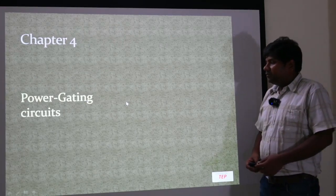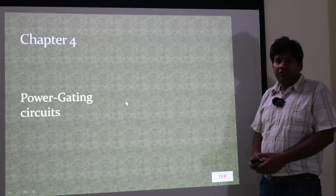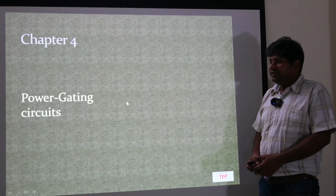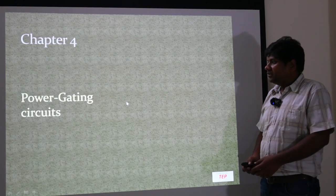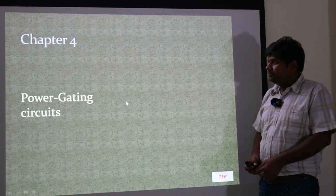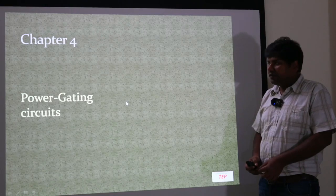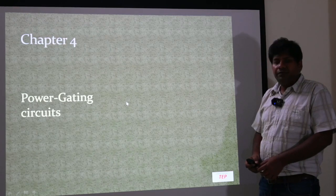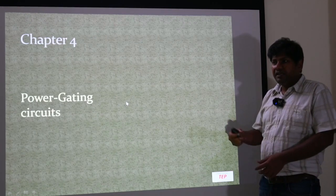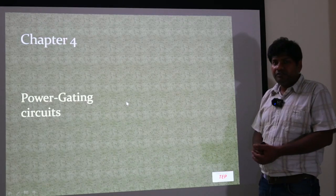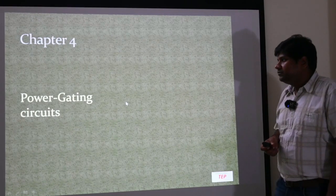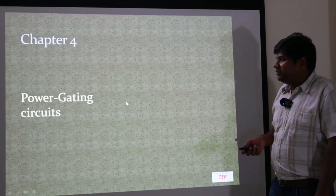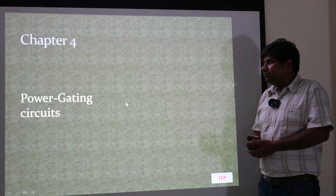So far we discussed how a SOC looks like, what are the different components of power dissipation in SOCs. We discussed the techniques of reducing switching power, and also the techniques of CMOS technology as well as design architecture techniques to reduce leakage power dissipation. Now we will talk about power gating in circuits.